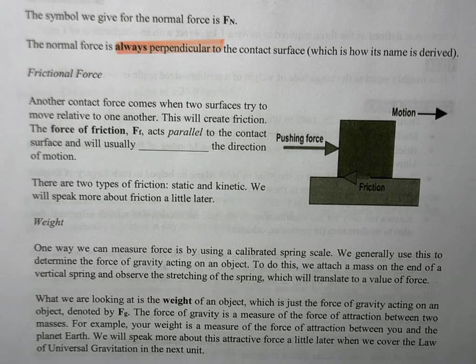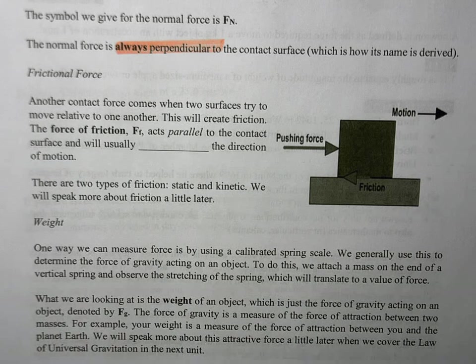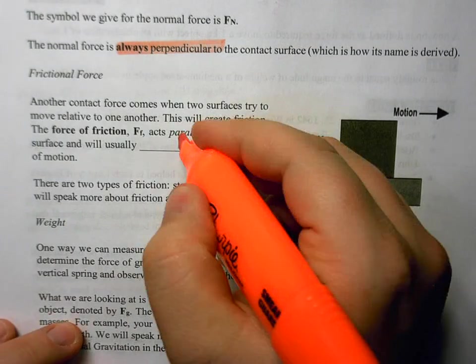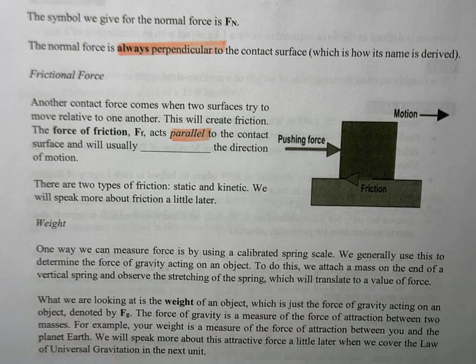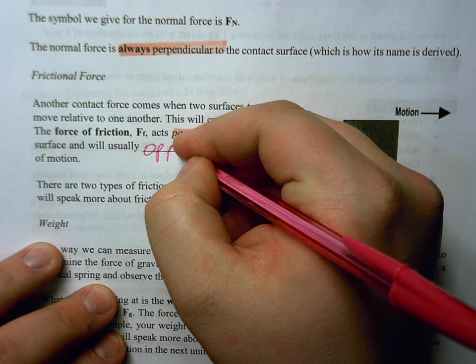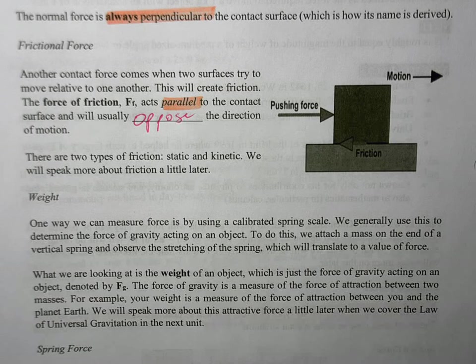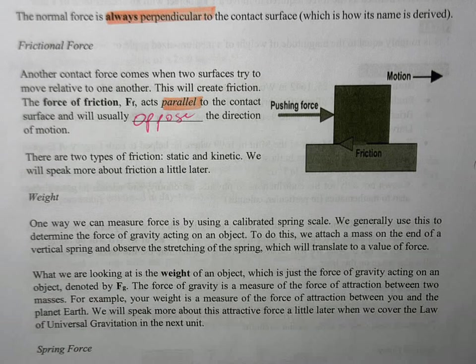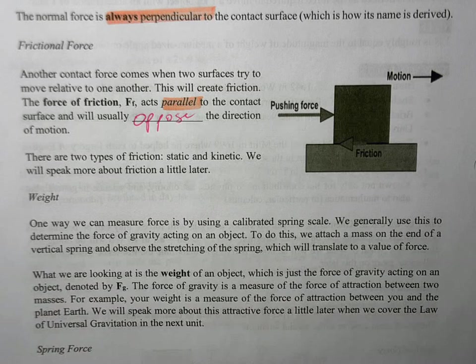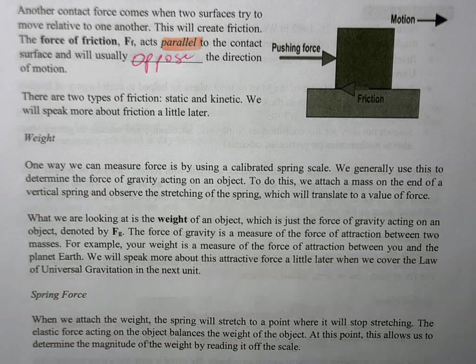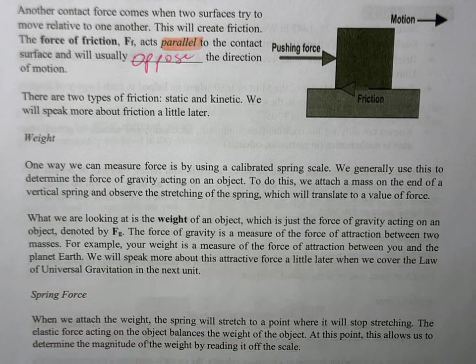Friction forces - you know about this from living in the real world. When we have two surfaces trying to move relative to one another, this creates friction. Our force of friction, denoted as F_F, acts parallel to the contact surface and usually opposes the direction of motion. Friction is not generally trying to help you out - it's usually trying to slow you down. If you have a direction of motion, or later when we talk about direction of intended motion, friction goes opposite to that. There are two types of friction - static friction when an object is not moving, and kinetic friction when an object is moving. We'll talk more about that later.